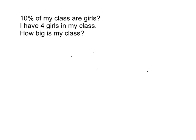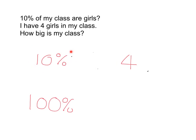What I know is that 10% is exactly the same as four. So 10% of the class is the same as four people, and what I want to know is what my whole class is. Hopefully you can see that what I'm trying to get to is the whole — I'm trying to get to 100%. If I talk about 100% of my class, I mean everybody. So I want to get from knowing what 10% of my class is to knowing what 100% of my class is.